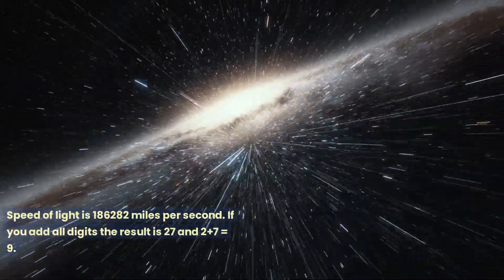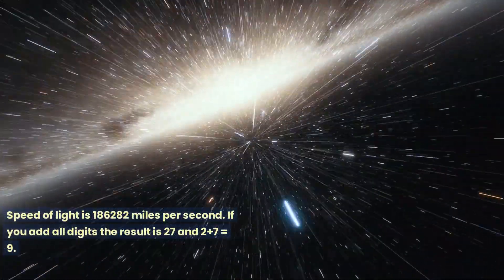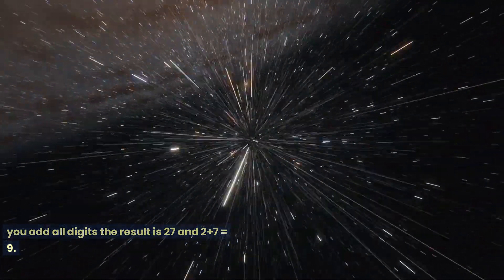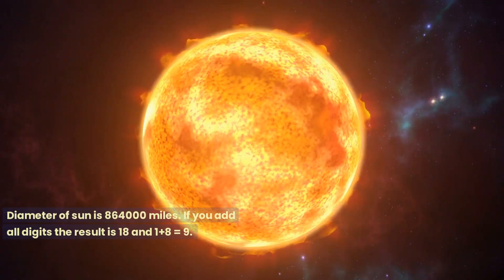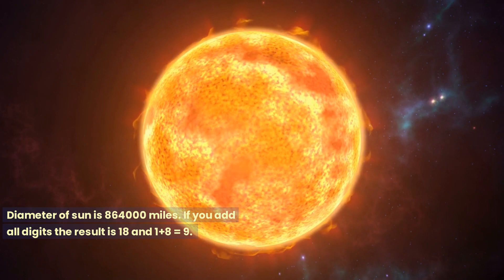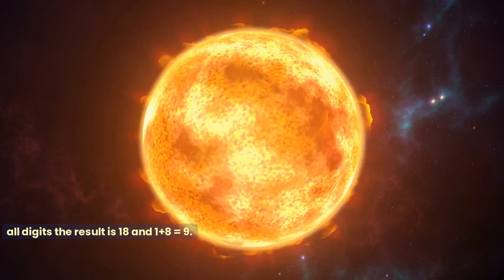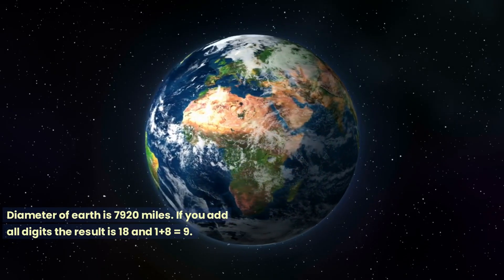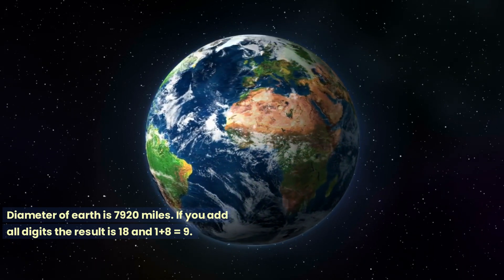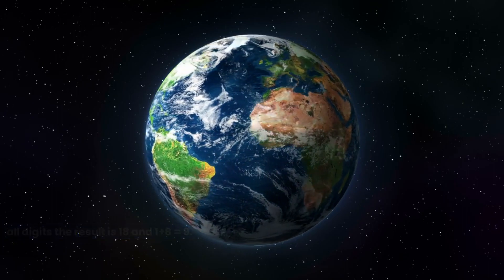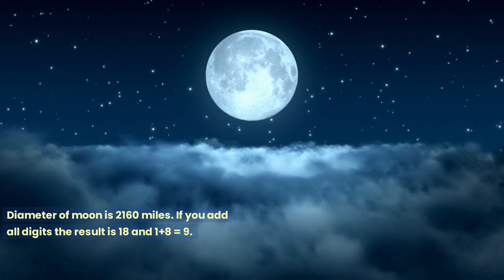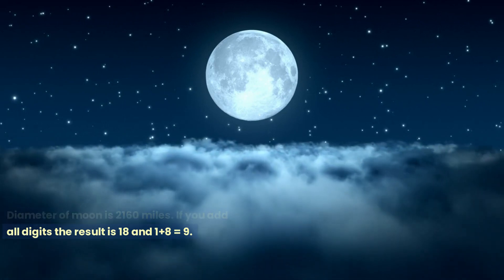Speed of light is 186,282 miles per second. If you add all digits the result is 27 and 2 plus 7 equals 9. Diameter of sun is 864,000 miles. If you add all digits the result is 18 and 1 plus 8 equals 9. Diameter of earth is 7,920 miles. If you add all digits the result is 18 and 1 plus 8 equals 9. Diameter of moon is 2,160 miles. If you add all digits the result is 18 and 1 plus 8 equals 9.